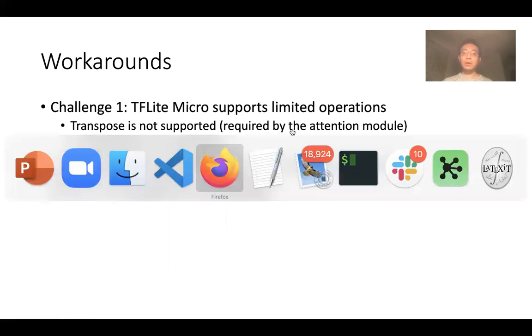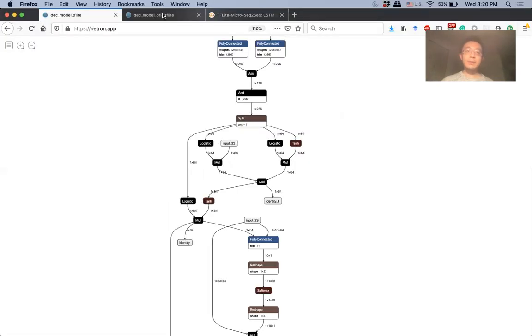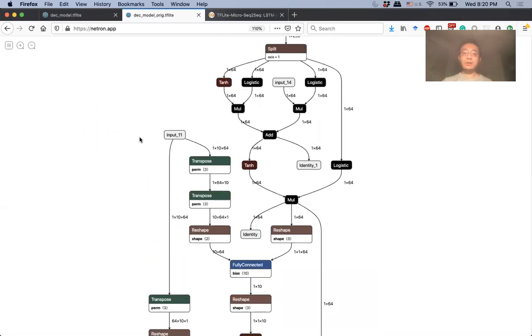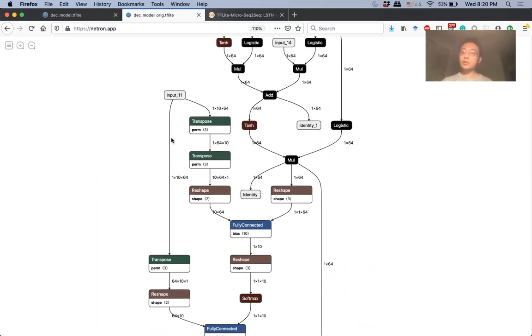For example, we can look at the computation graph of a decoder LSTM cell using attention. We can see that there are such transpose operations and those cannot be supported by TF-Lite Micro.